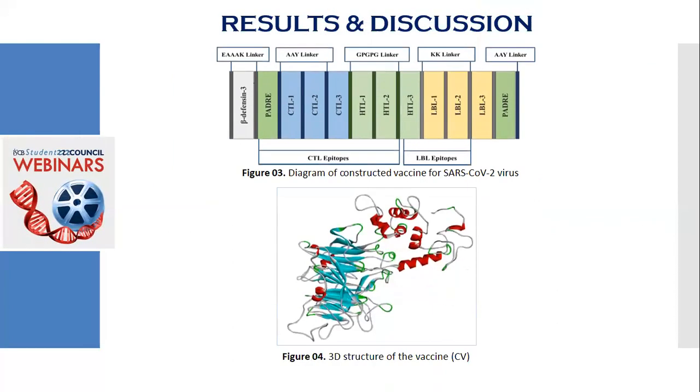The vaccine has been constructed using the best selected epitopes, as I have mentioned previously, which could be used to fight against the selected viral strains effectively. Beta-defensin 3 was used as adjuvant and the PADRE sequence was also used for the vaccine construction to increase its efficacy. Three linkers were also used at their appropriate positions during conjugating the epitopes to form the vaccine.